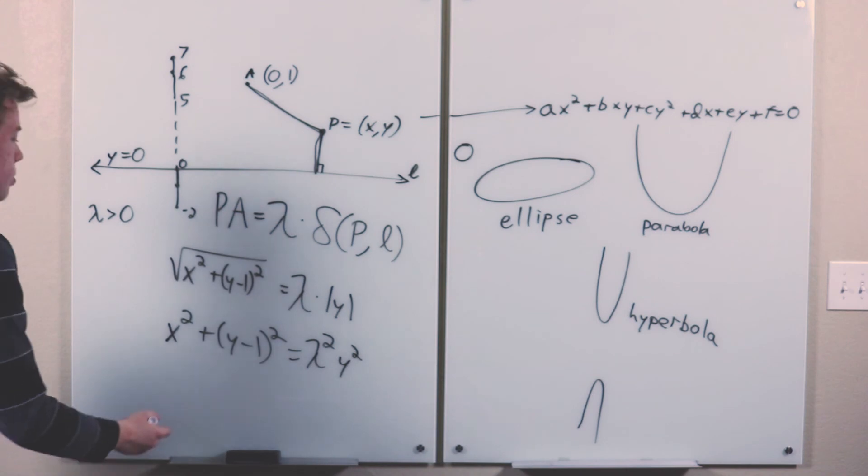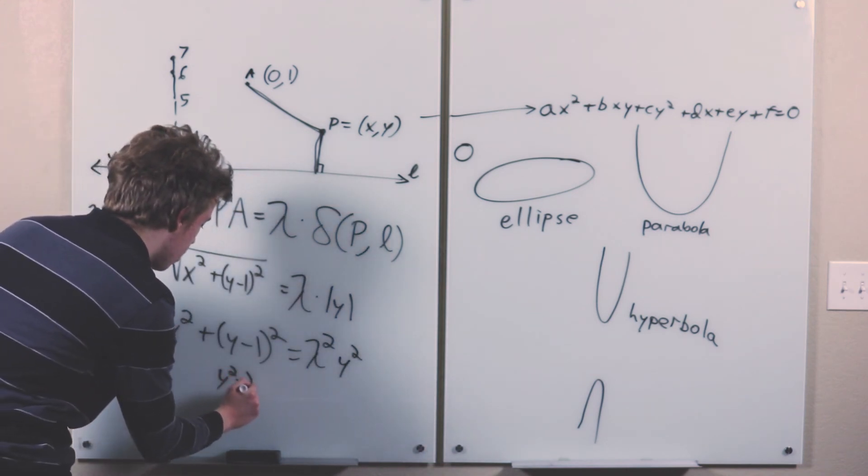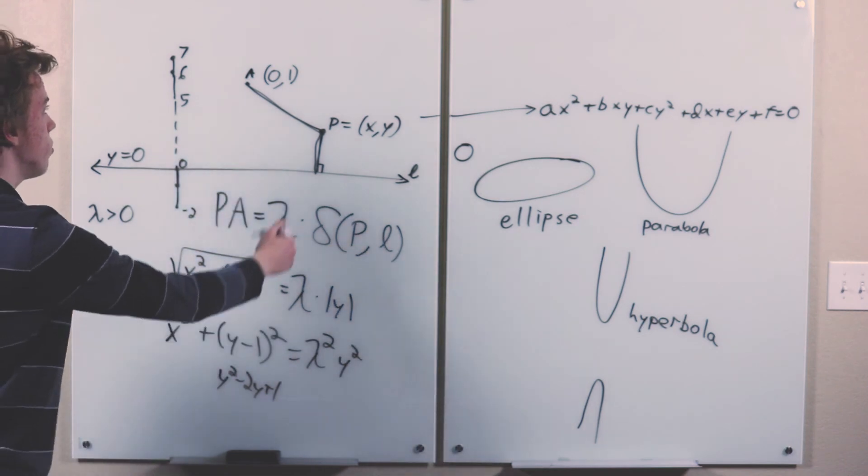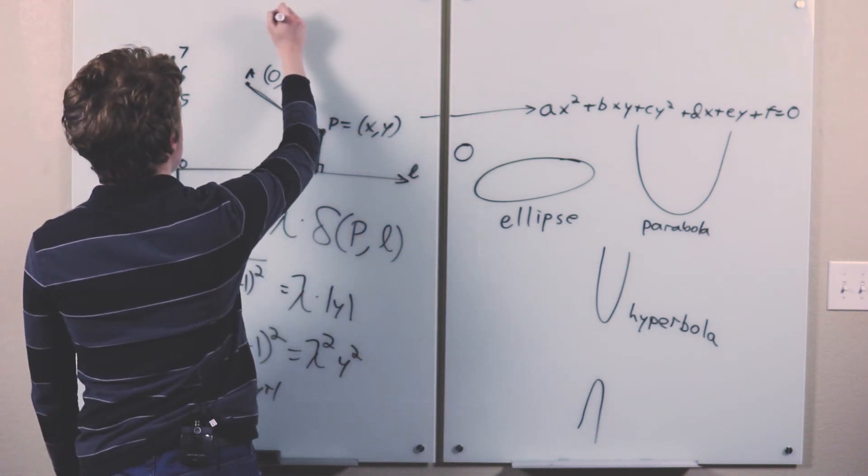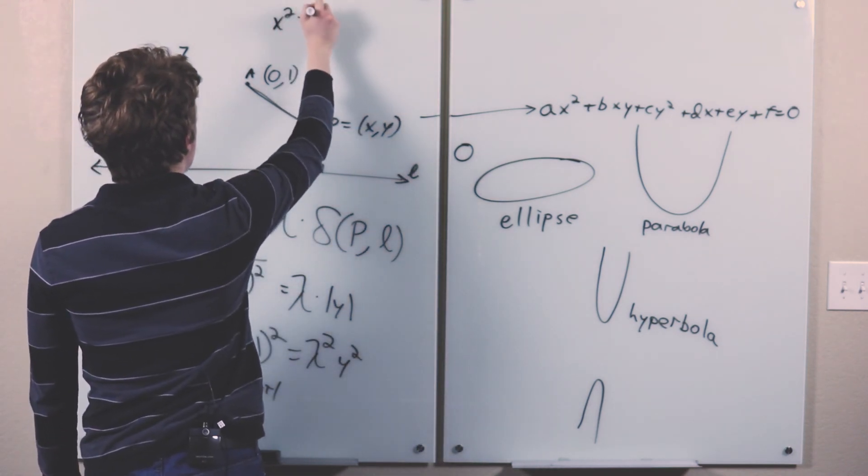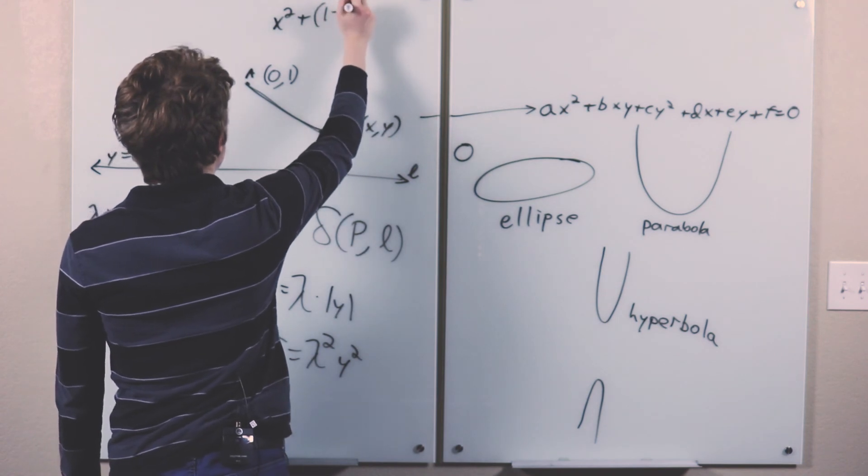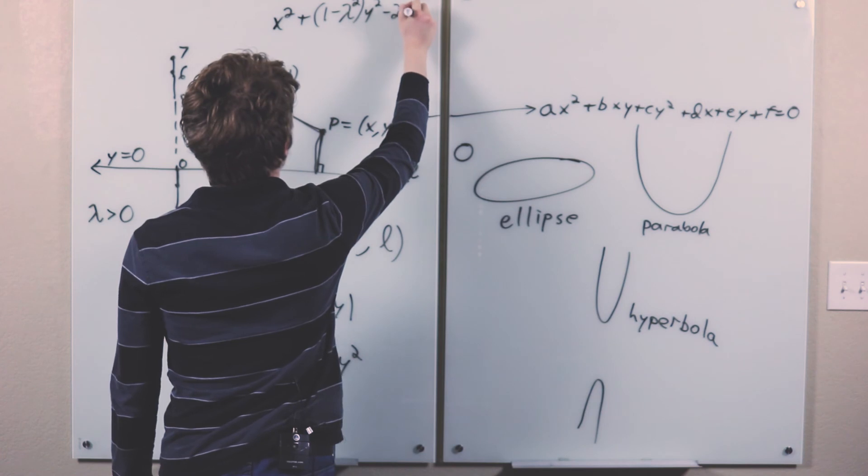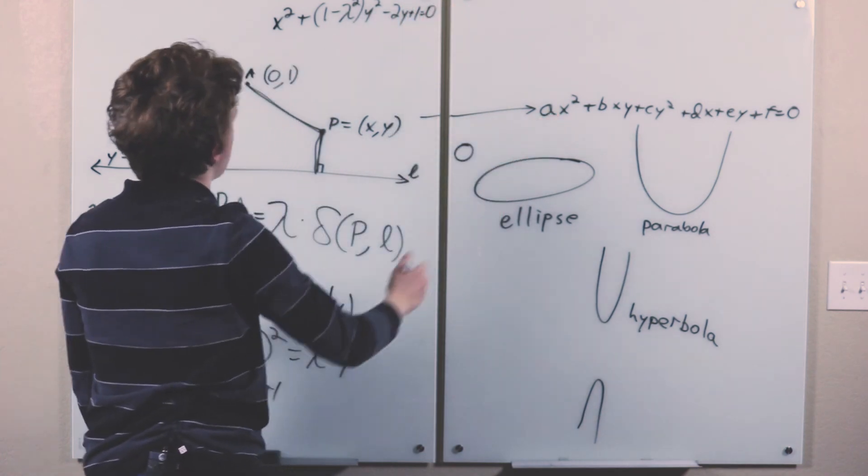And now this gives you a curve of degree 2, because you can expand this to y squared minus 2y plus 1, and then subtract this over here. Grouping terms, we get this equation, x squared plus 1 minus lambda squared y squared minus 2y plus 1 equals 0, which has this form.